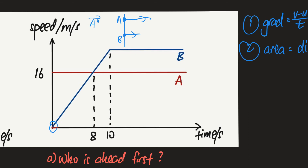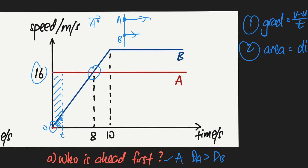Let's answer some questions. Who is ahead first? From the graph, B started from rest — at time equals zero, its speed is zero — while A at time equals zero is already traveling at 16 meters per second, so obviously A will be ahead first. Another way: look at the distance traveled at some early time t. The distance covered by B is the area of a triangle, while for A it is the area of a rectangle, which is much greater — so A is ahead first.